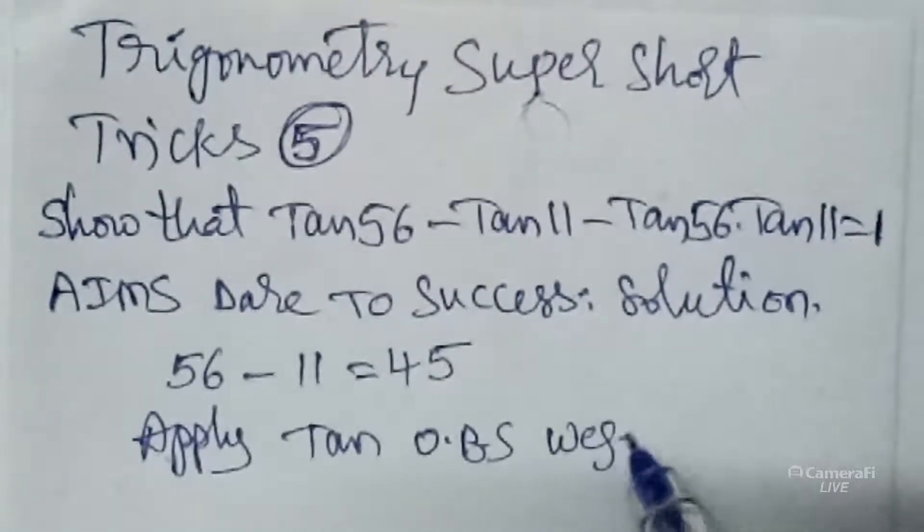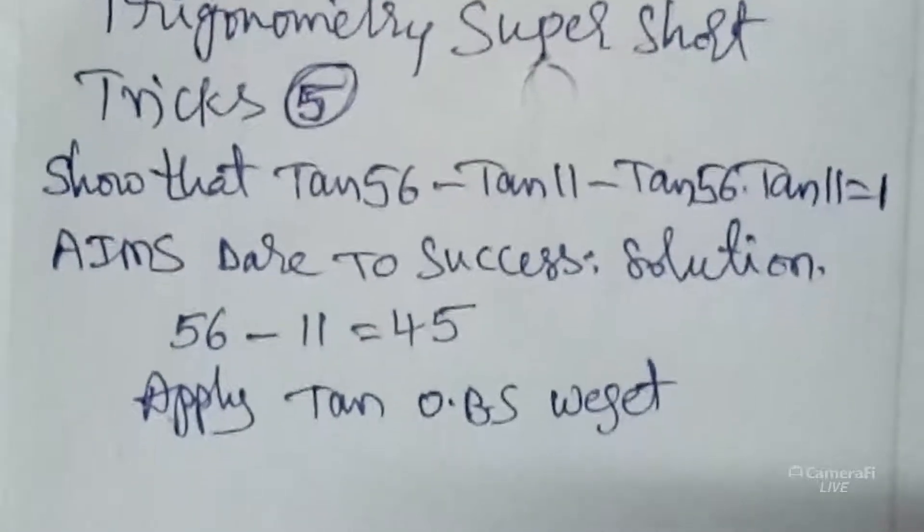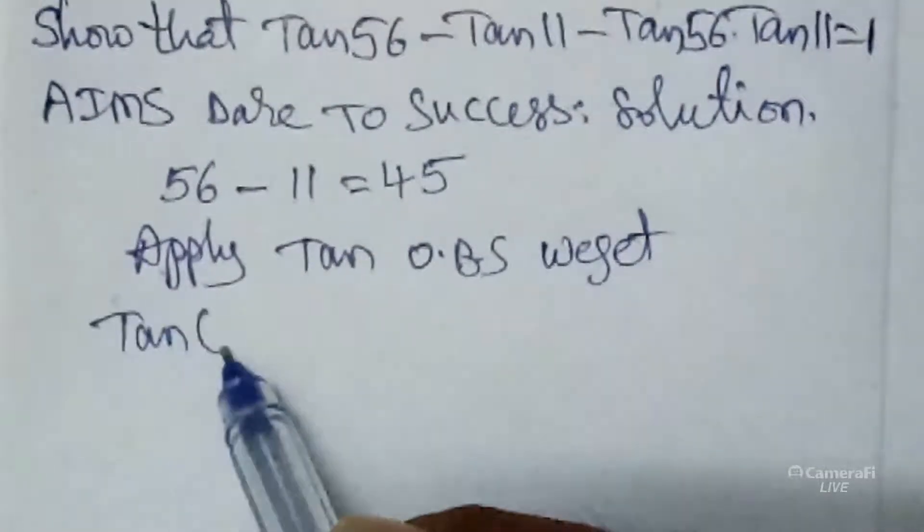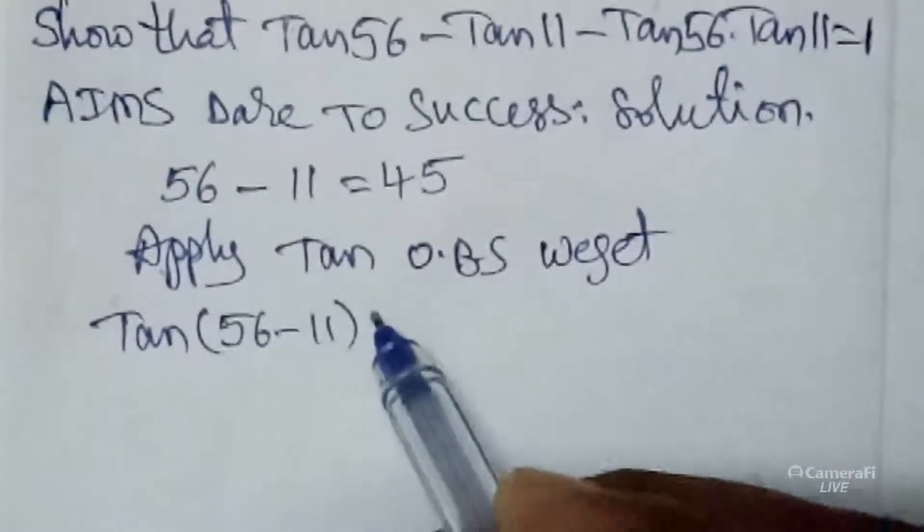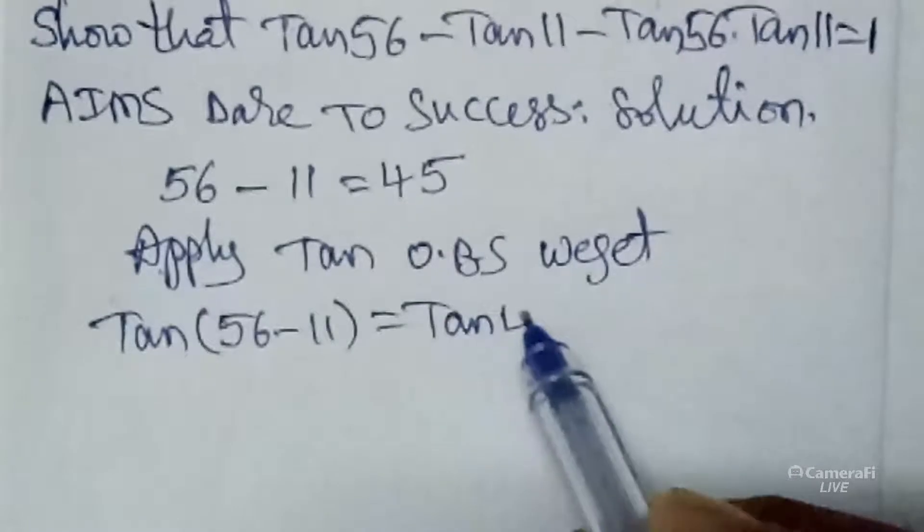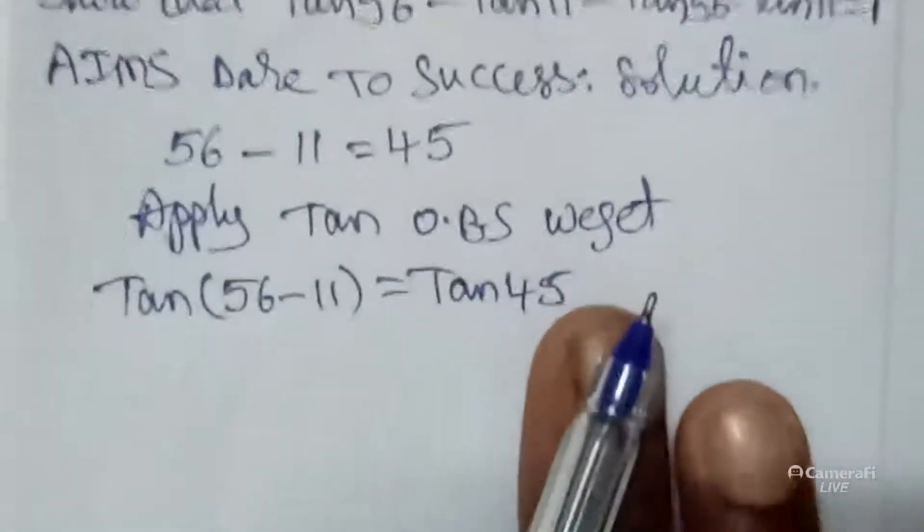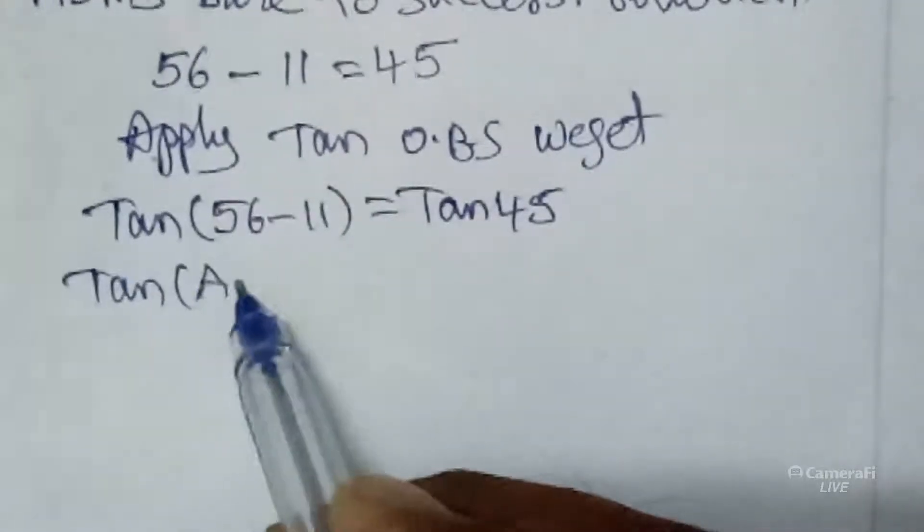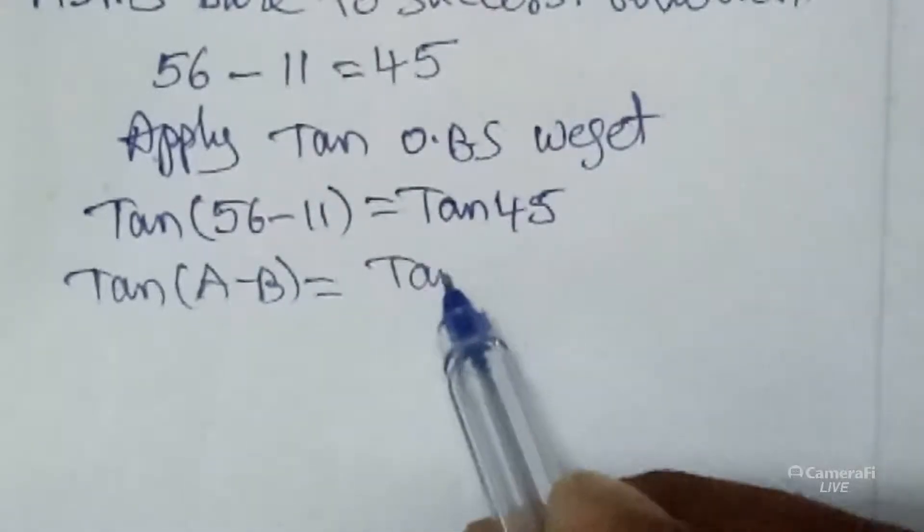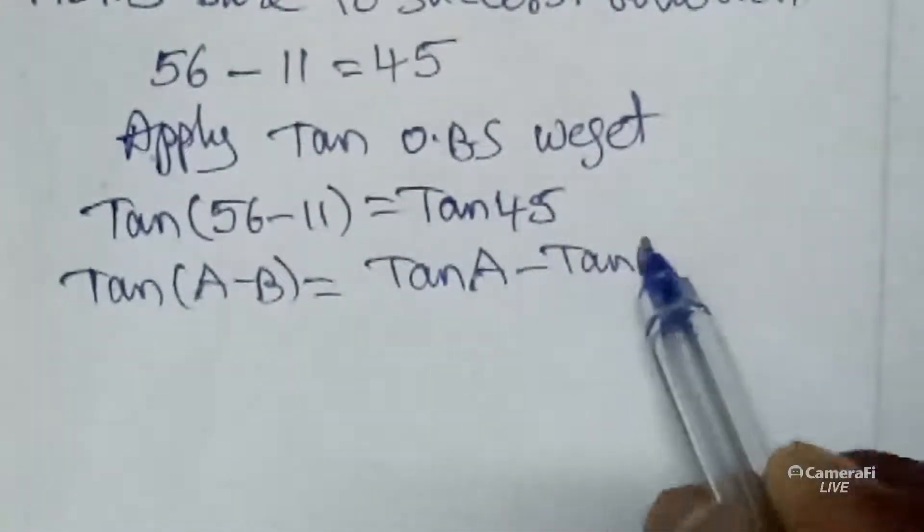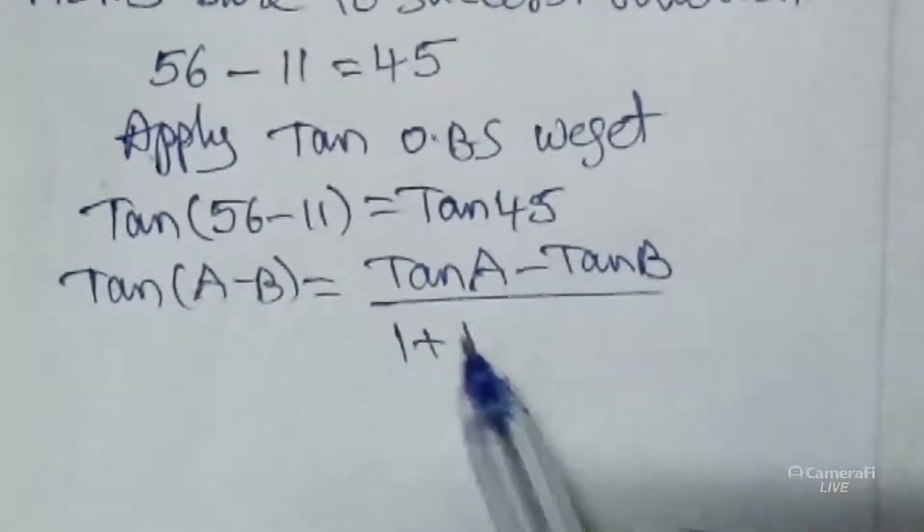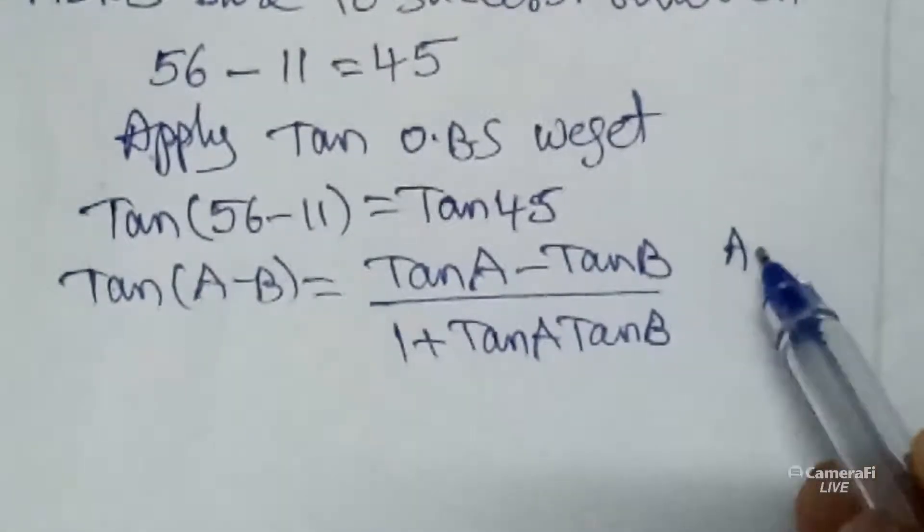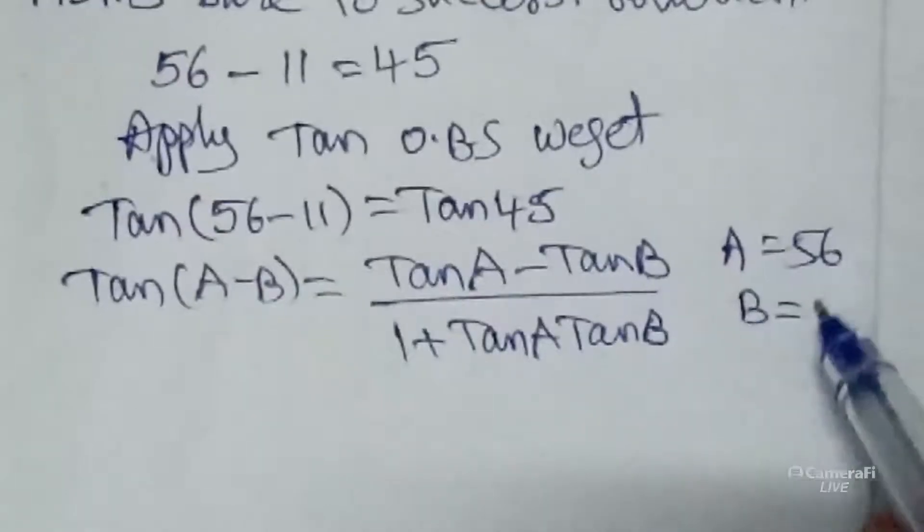Tan on both sides. Tan of 56 minus 11 is equals to tan 45. Here's one formula, my dear students: tan of A minus B is equals to tan A minus tan B by 1 plus tan A tan B. Here A is equals to 56, B is equals to 11.